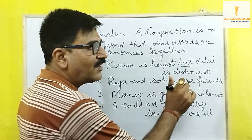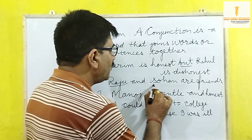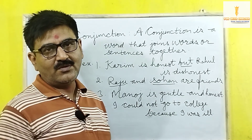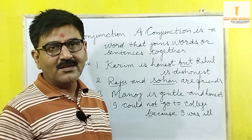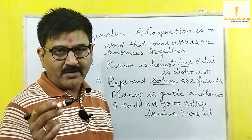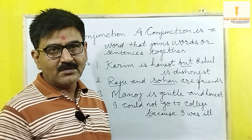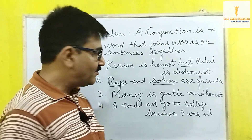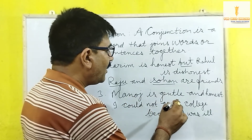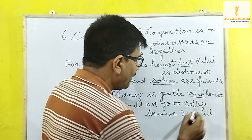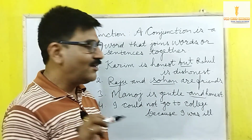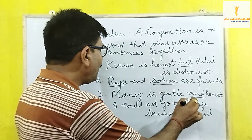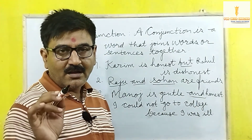'Raju and Sohan are friends' — यहाँ 'and' दो words Raju और Sohan को जोड़ रहा है। यह जरूरी नहीं कि noun ही हो — pronoun, verb, या adverb भी हो सकता है — 'and' से हम जोड़ सकते हैं। 'Manoj is gentle and honest' — यहाँ 'and' दो adjectives gentle और honest को जोड़ रहा है — यहाँ भी 'and' conjunction है।